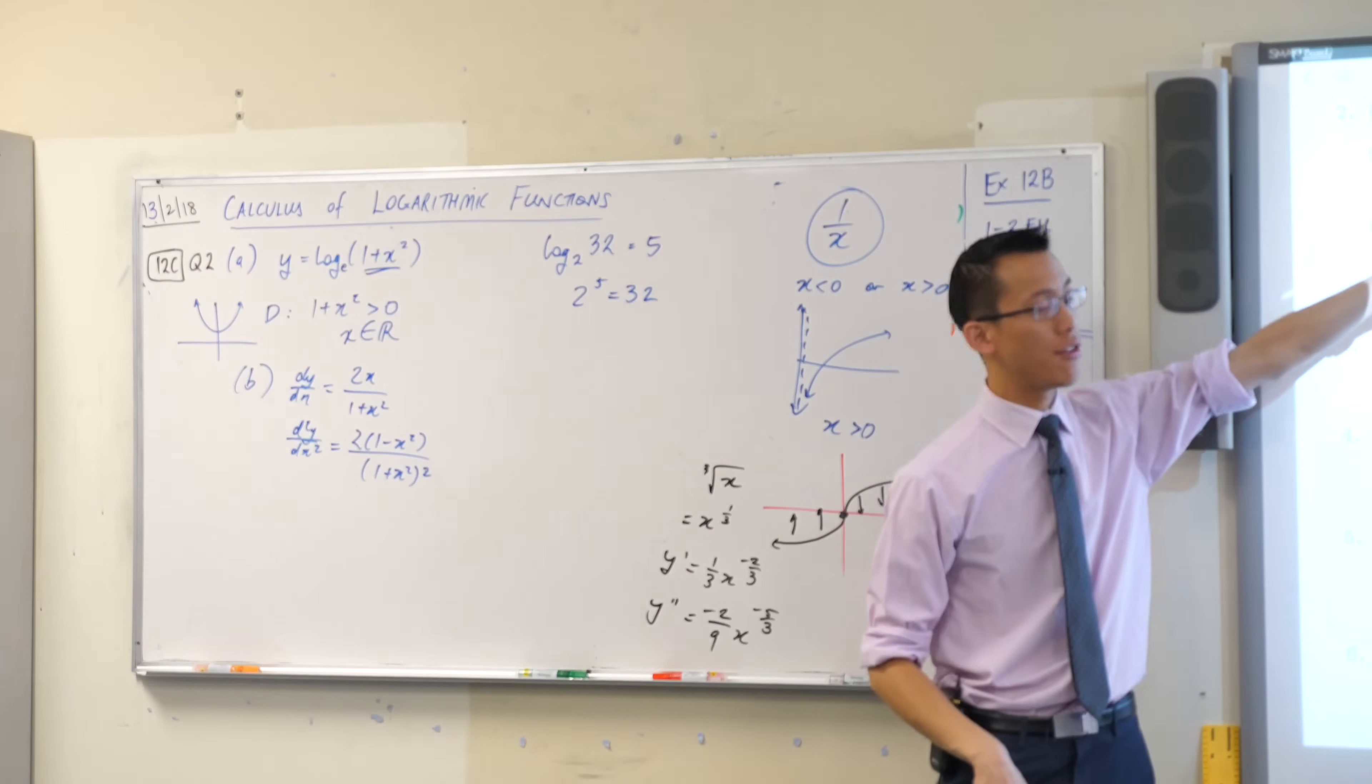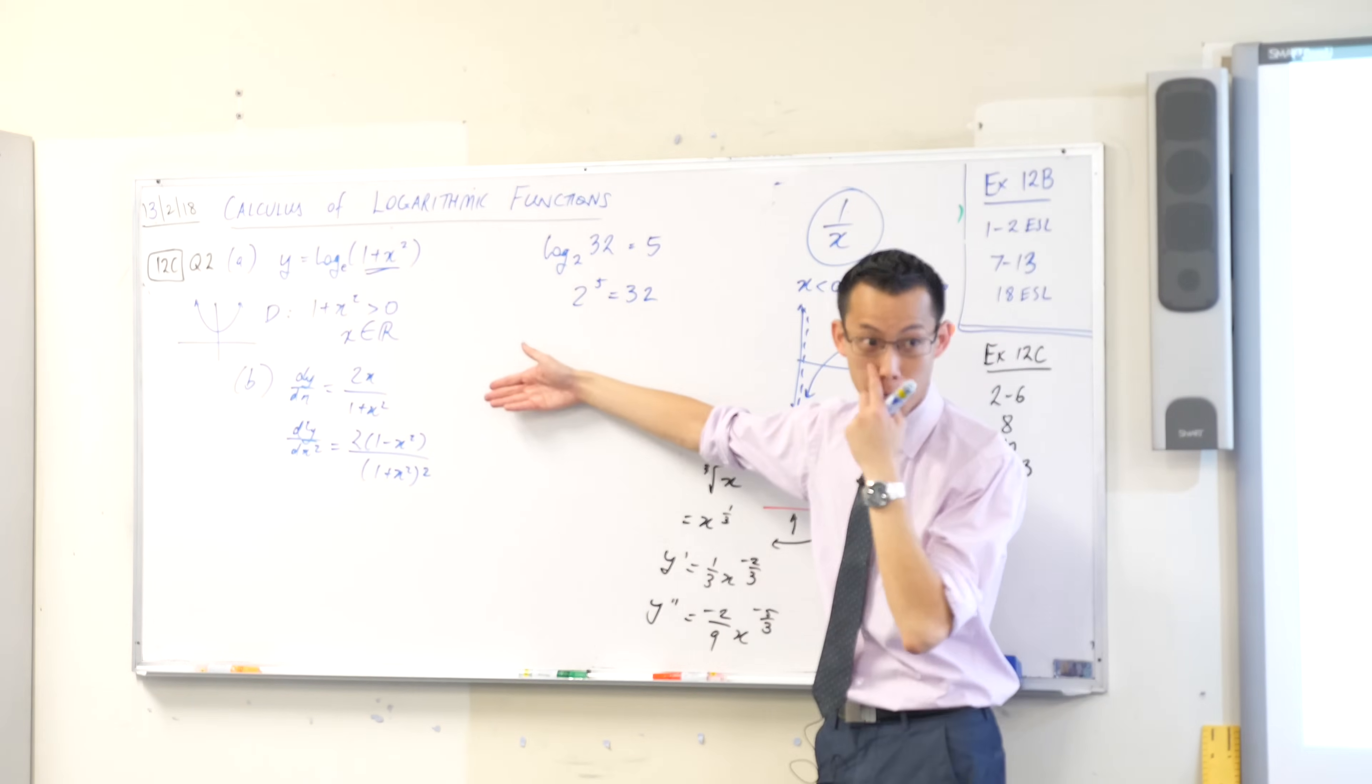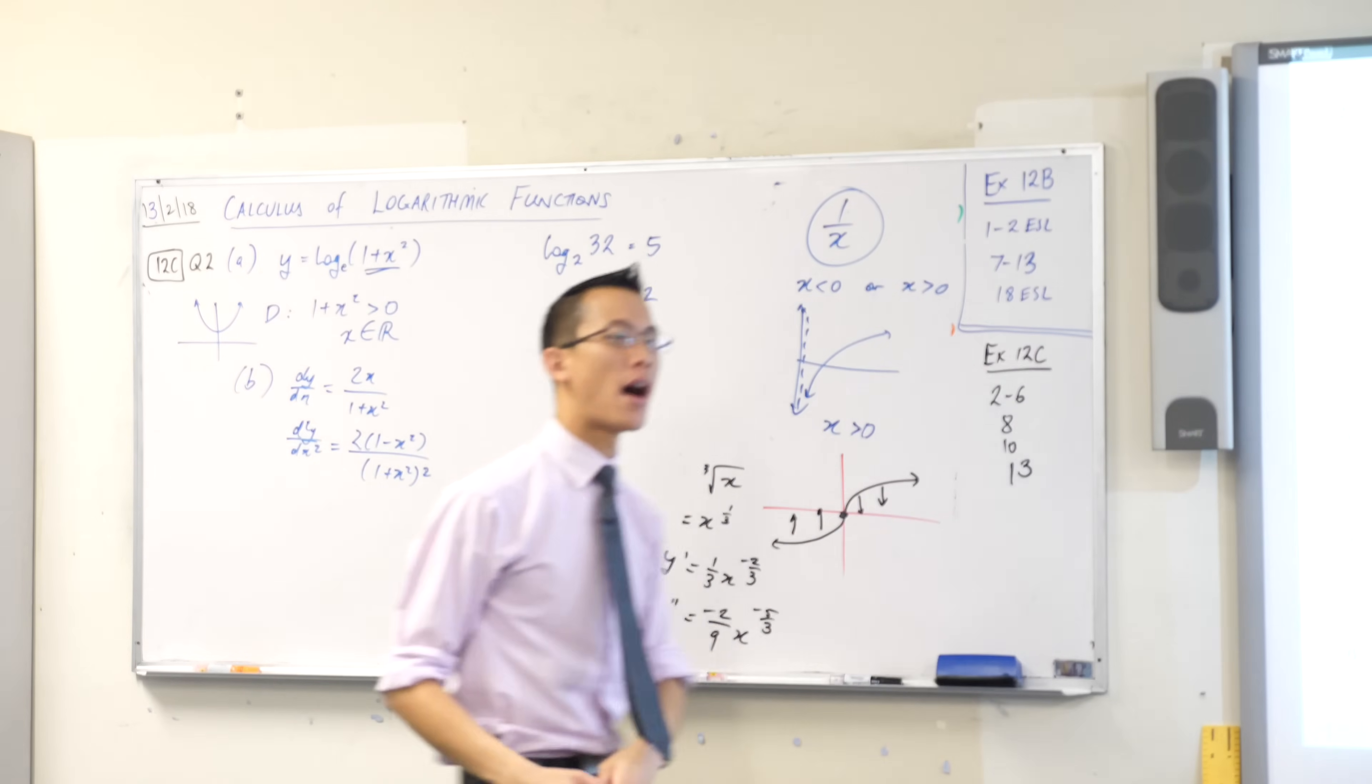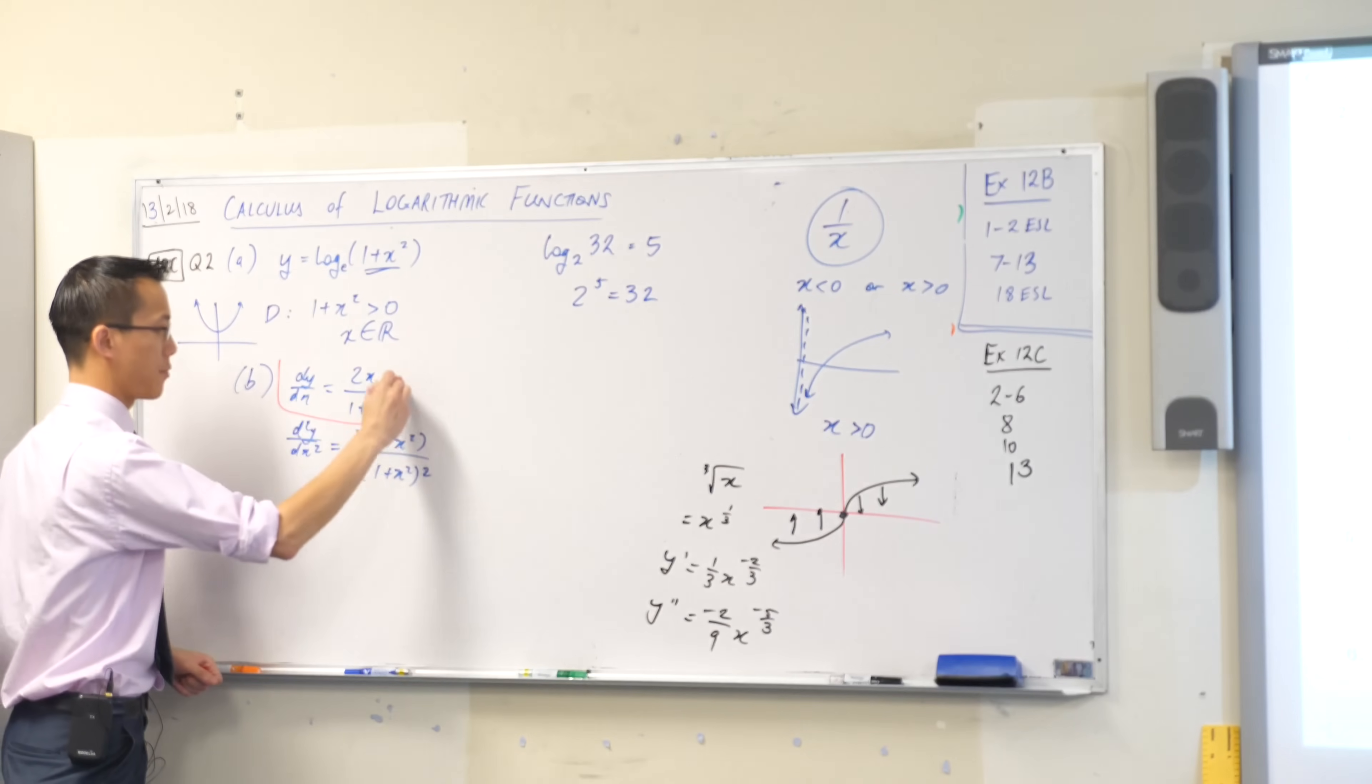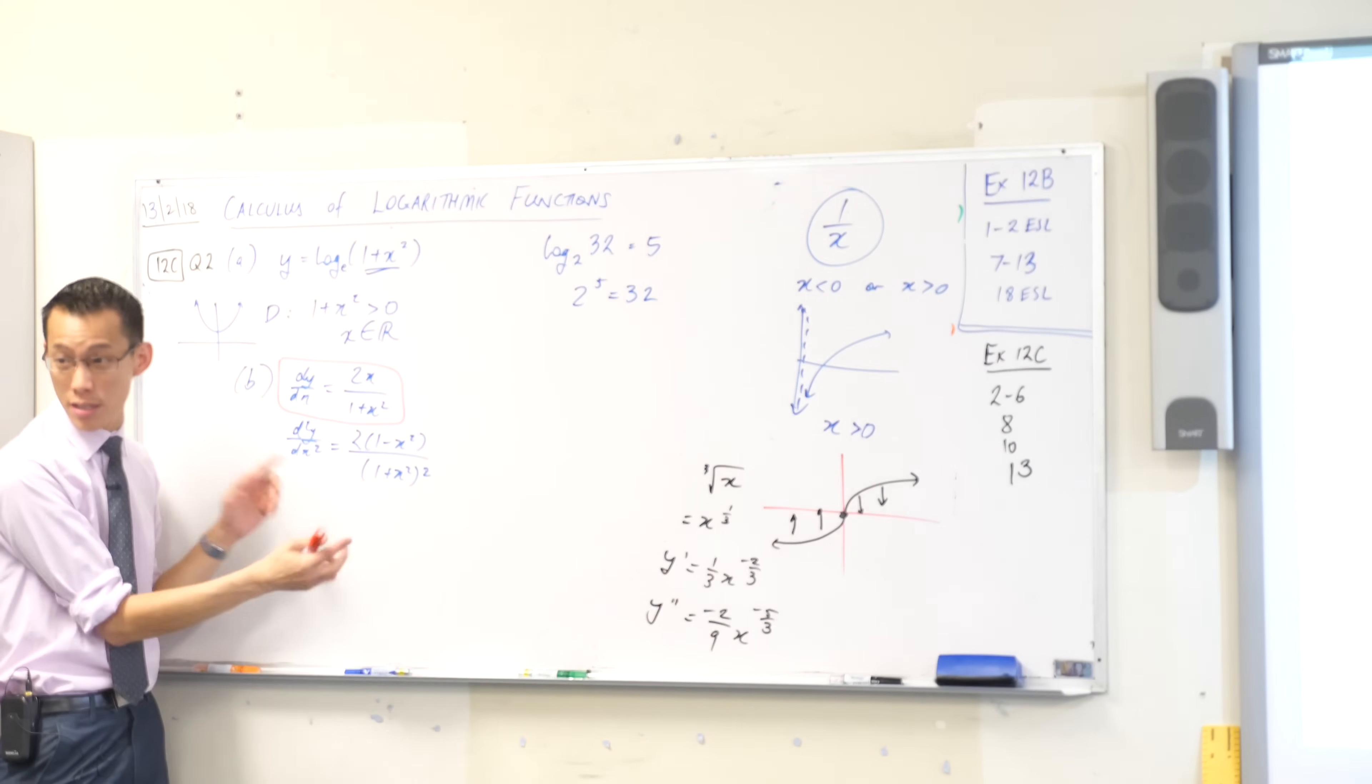Part C then says, hence show that. So it says hence. What does that mean again? I must use the previous part, sometimes multiple parts. Show that it's got one stationary point and determine its nature. Which part of the working that I have right now is to do with stationary points? It's the first derivative, this guy. So I'm going to use that to find where the stationary point is. And then, being that I've already got this, the second derivative, I might as well use that to determine the nature. Does that make sense?